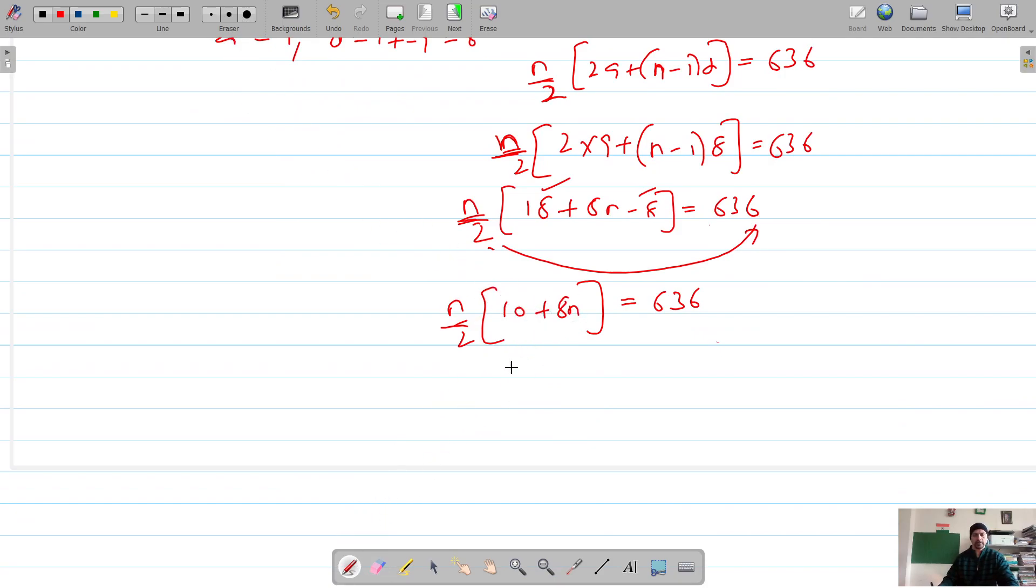So it's 8n. Okay, so if you multiply this, it's 10 plus 8n square is equal to 636 into 2. So 636 into 2: 6 times 2, 2 times 6, 7, 6 times 12, it's 1272.